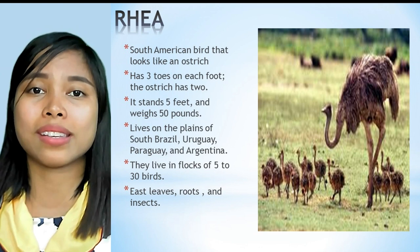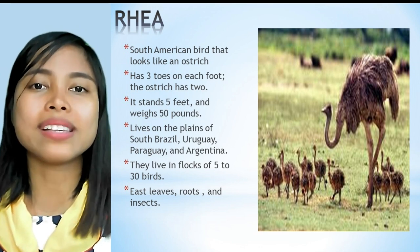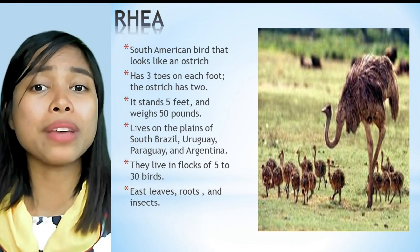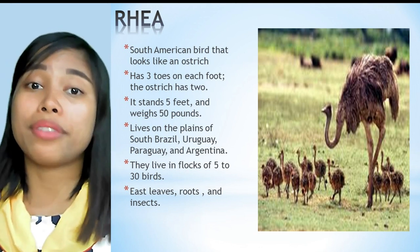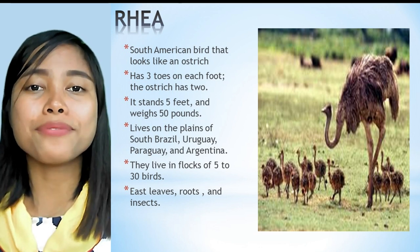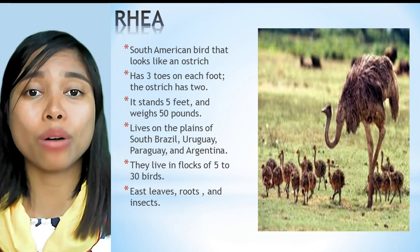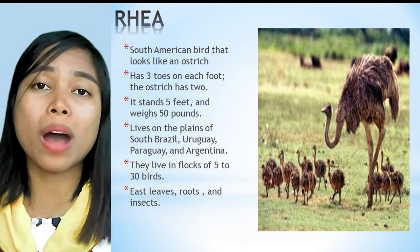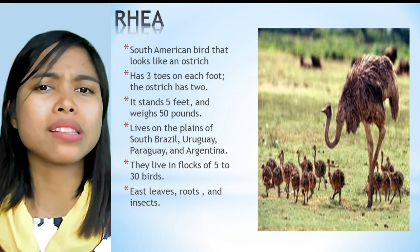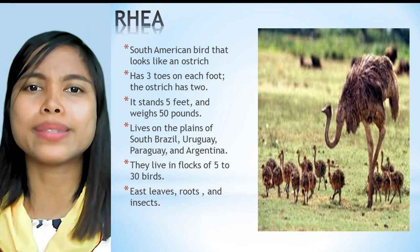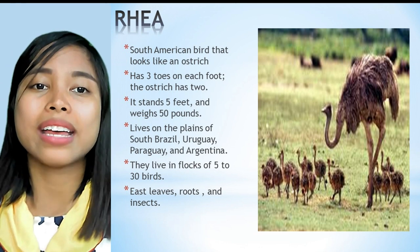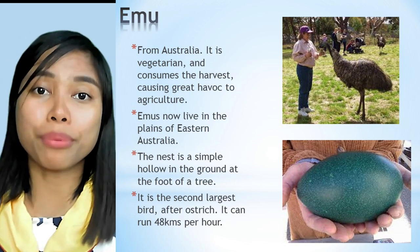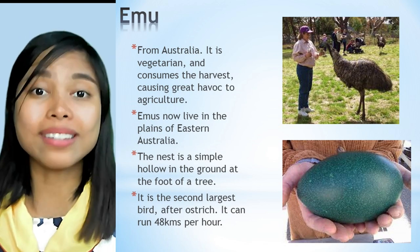The rhea is a South American bird that looks like an ostrich. It has three toes on each foot, stands five feet tall, and weighs 50 pounds. It lives on the plains of south Brazil, Uruguay, Paraguay, and Argentina. Rheas live in flocks of five to thirty birds and eat leaves, roots, and insects.